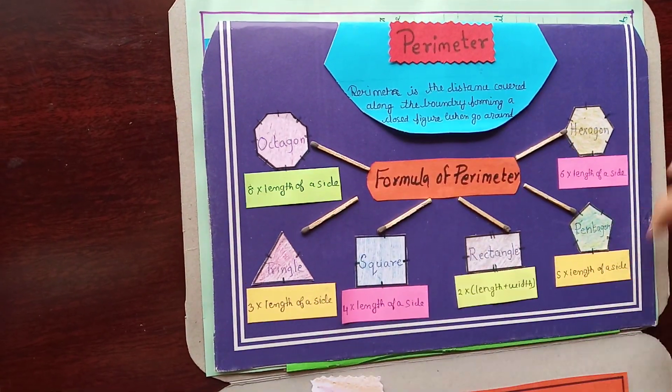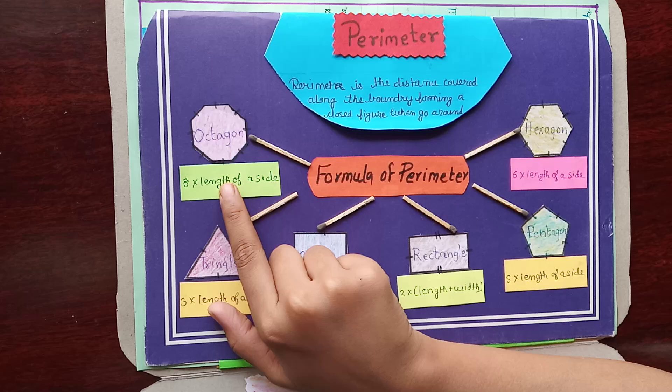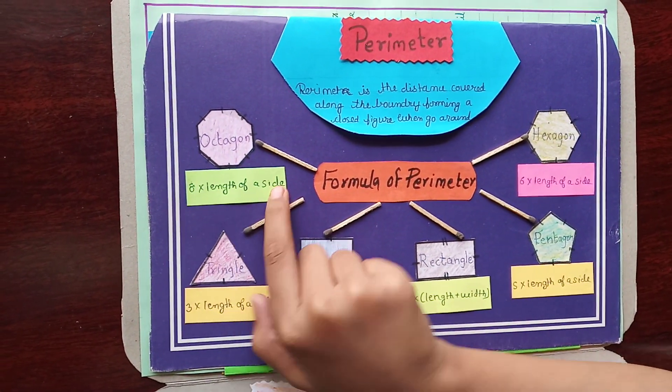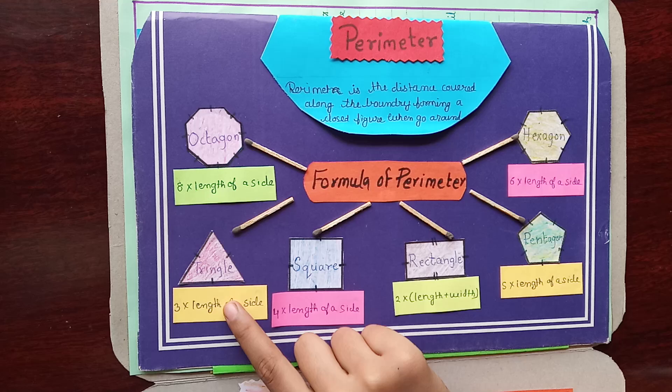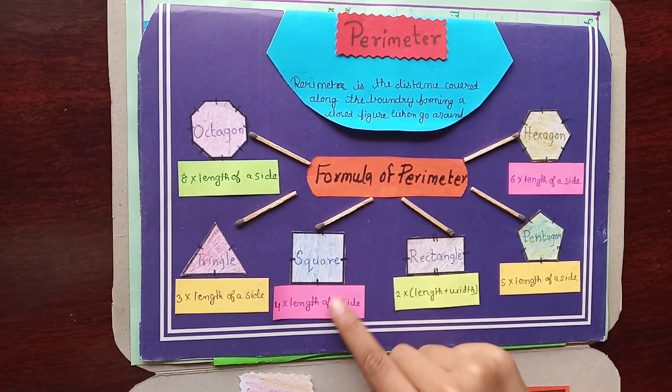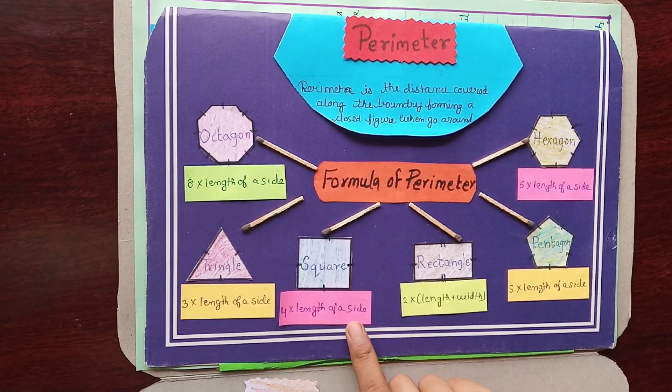And here are the formulas of perimeter of different shapes. Here is the octagon, the formula of octagon: 8 into length of a side. Here is the triangle, 3 into length of a side. Here is square. Square formula is 4 into length of a side.